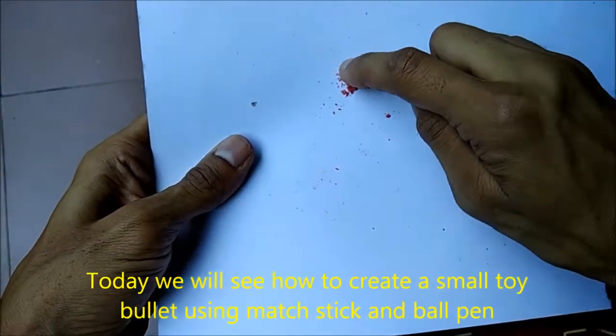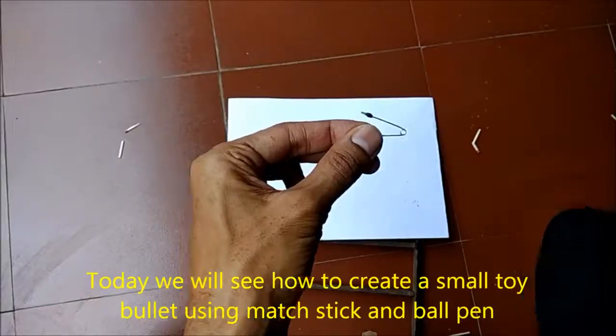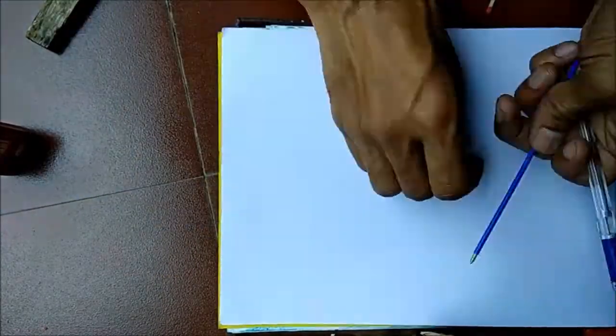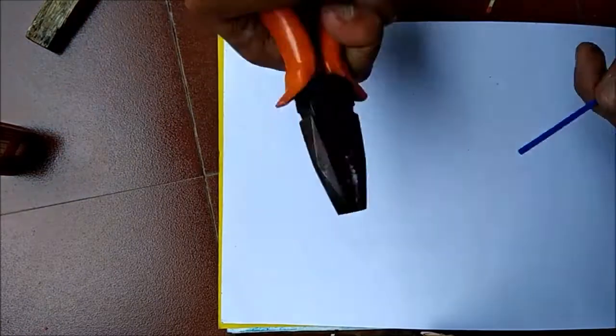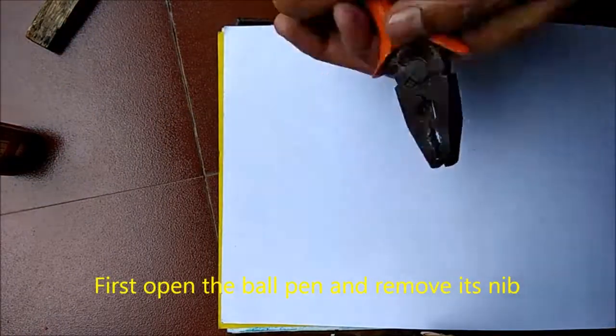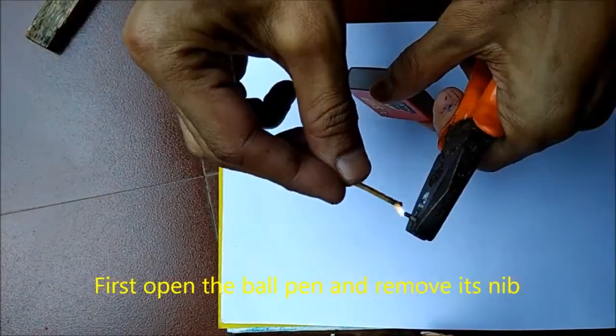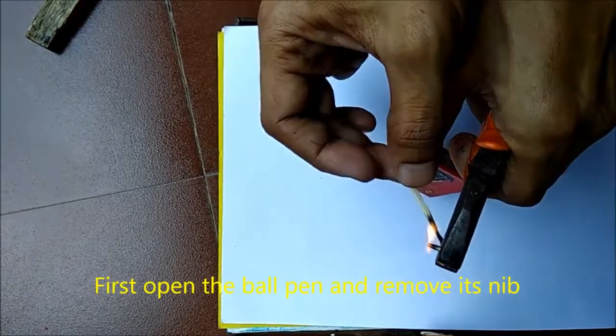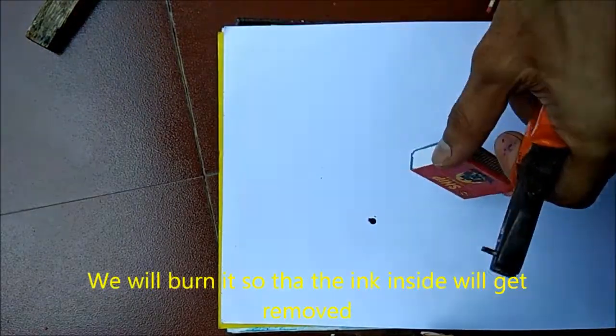Today we will see how to create a small toy using ballpoint pen nib and matchstick powder. First, open the ball pen and remove its nib. We will burn it so that the ink inside will get removed.